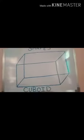Now let's look at another shape — cuboid. A cuboid looks like a box. A cuboid has eight vertices. How many vertices? Eight. Let's count: one, two, three, four, five, six, seven, eight.